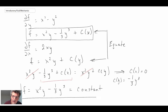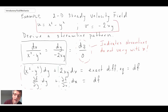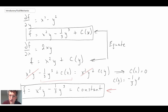This equation x²y − (1/3)y³ = constant is the equation for the streamlines that satisfy the velocity field specified at the beginning of the problem. We can plot this stream function using a contour plot — each contour line represents a streamline for that function.